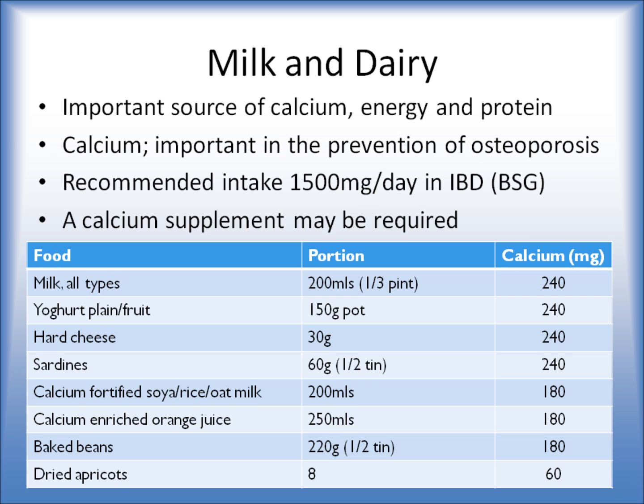Dairy foods like milk, yogurt and cheese are quite high in calcium. There are alternatives as well if you don't take dairy — things like sardines, calcium-fortified soya milks, oats and rice milks, fortified orange juice, baked beans, and dried apricots. These can give you a good source of calcium, but it's important to include them regularly throughout the day.